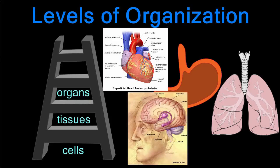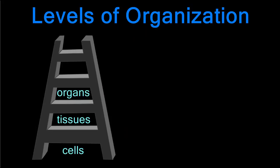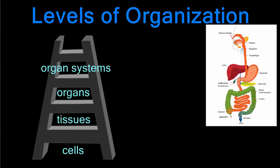The next step on our ladder of life is organs. An organ is a group of tissues working together to perform a task. There are many organs in your body, including the stomach, heart, lungs, and brain.